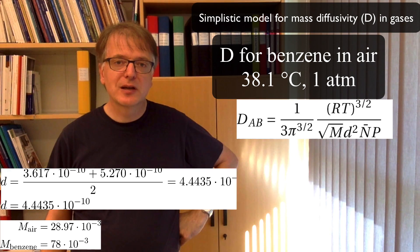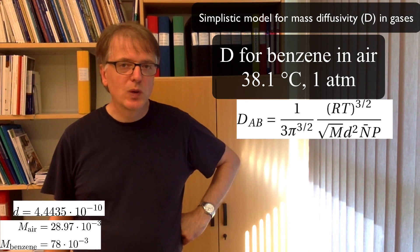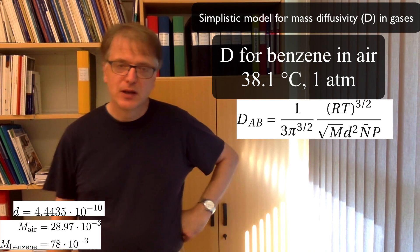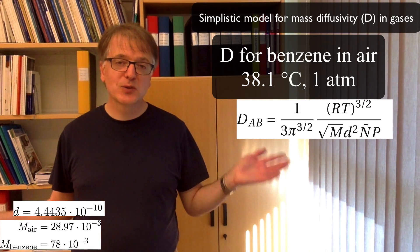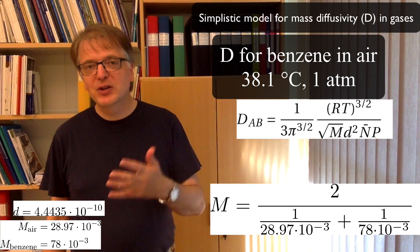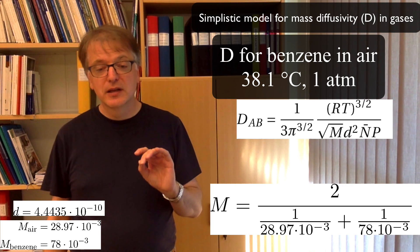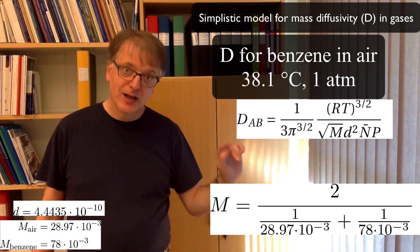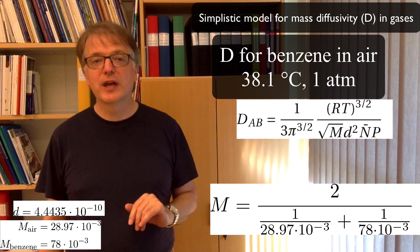What about the molecular weight? Can you take the same average? Well, if you want to have reasonably accurate results, you can't. You need to take another kind of average. We won't go into the details of why. We will just say that the average molecular weight equals two divided by one divided by the molecular weight one plus one divided by the molecular weight for the other.